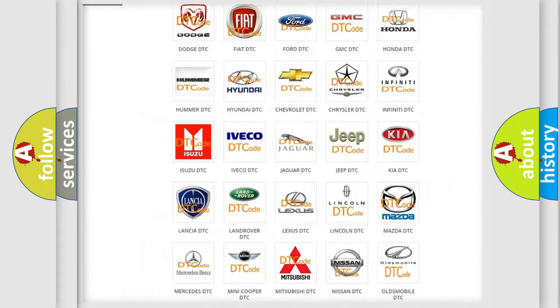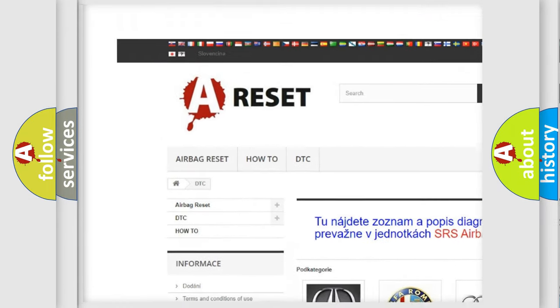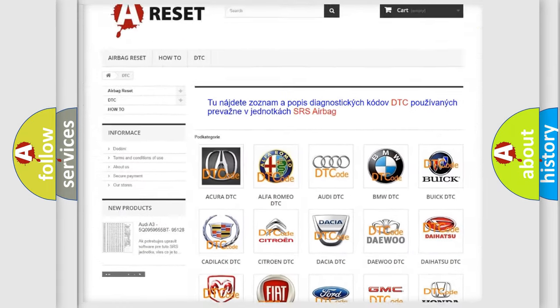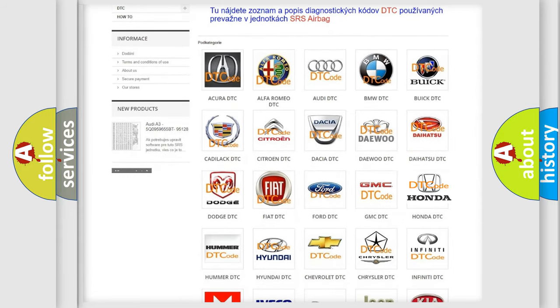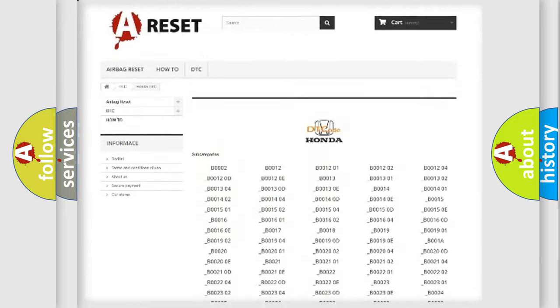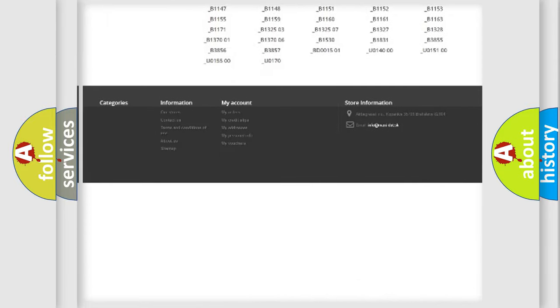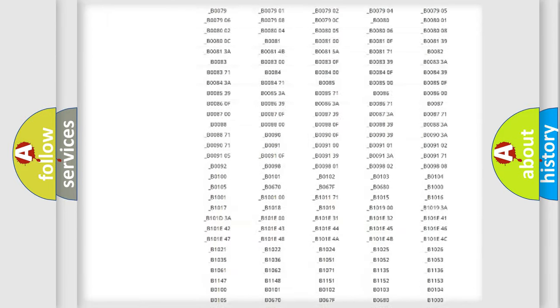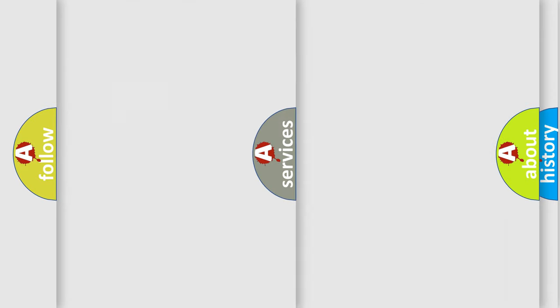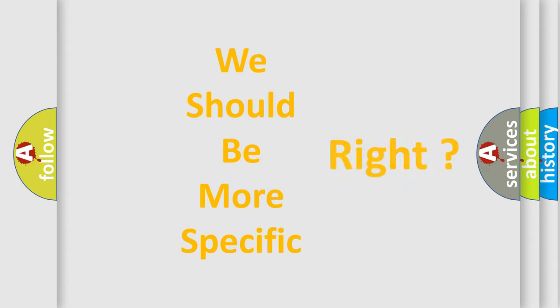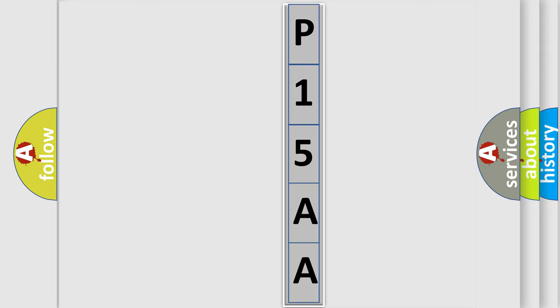Our website airbagreset.sk produces useful videos for you. You do not have to go through the OBD2 protocol anymore to know how to troubleshoot any car breakdown. You will find all the diagnostic codes that can be diagnosed in Honda vehicles, and many other useful things. The following demonstration will help you look into the world of software for car control units. You can move the video a bit further.